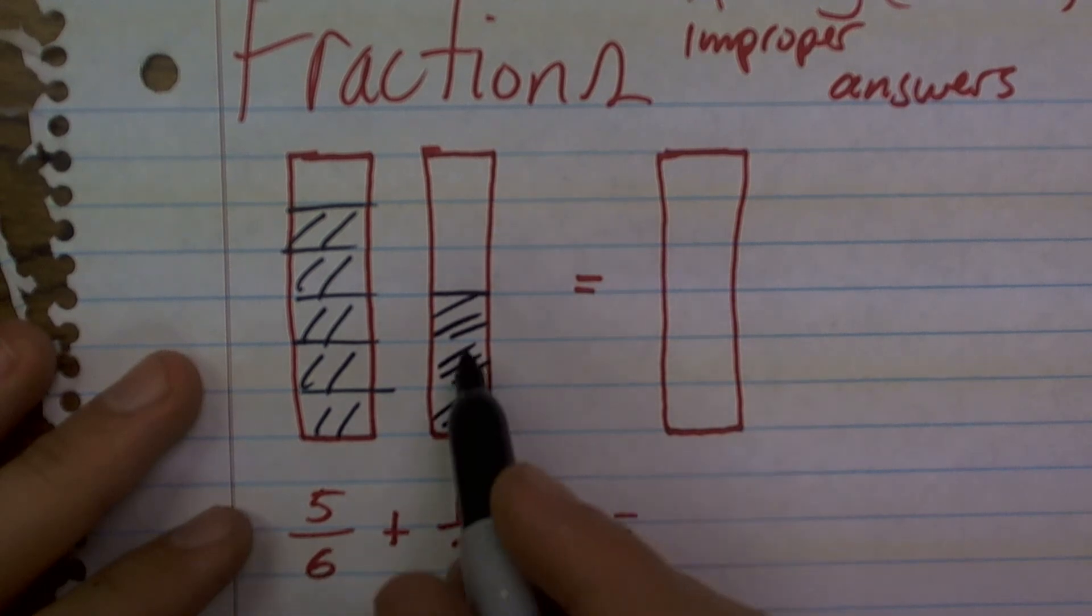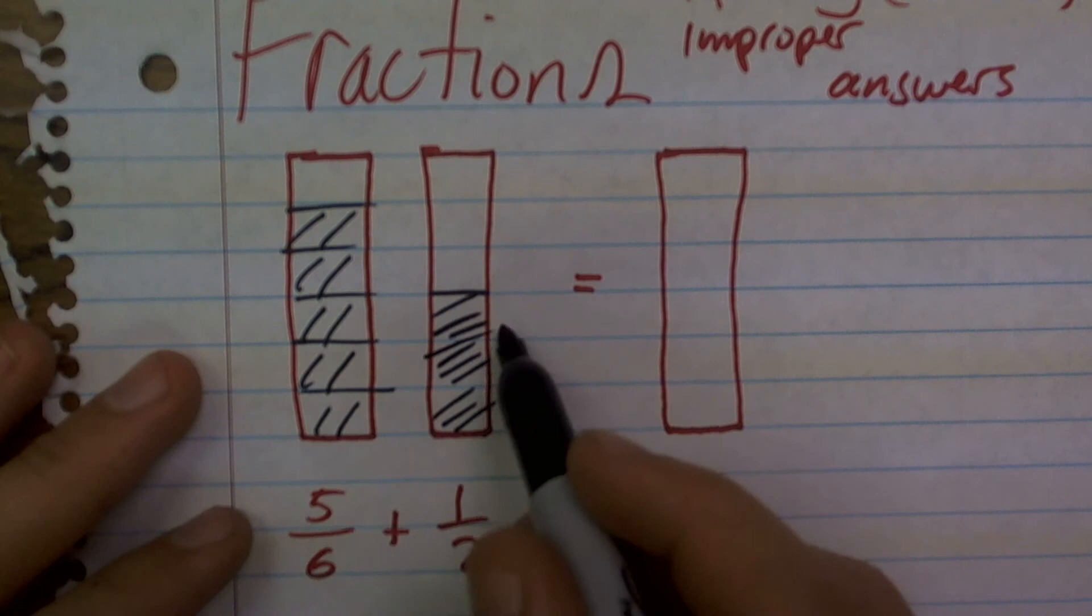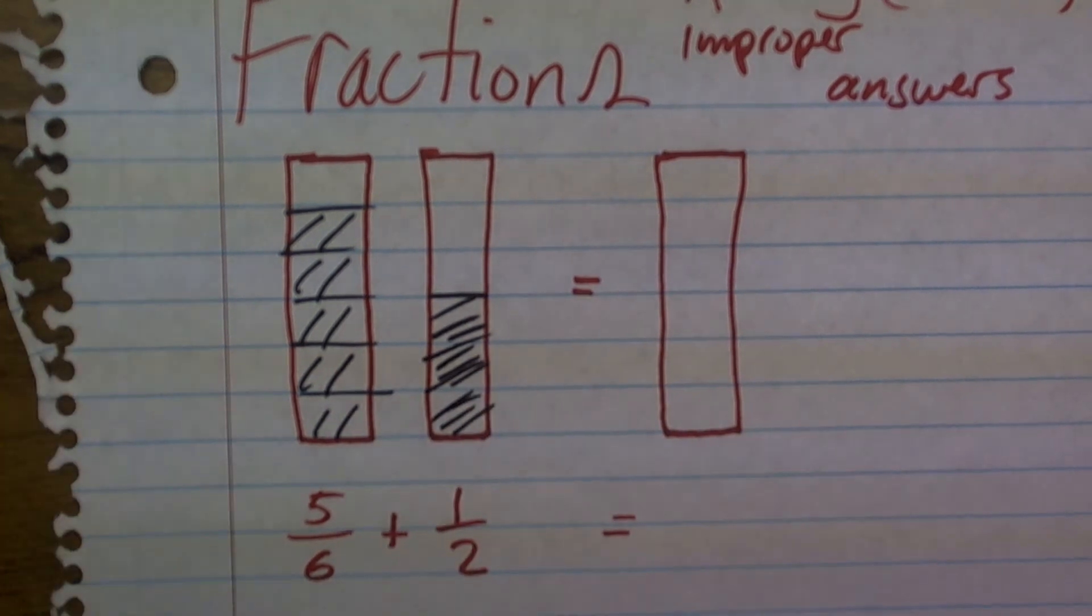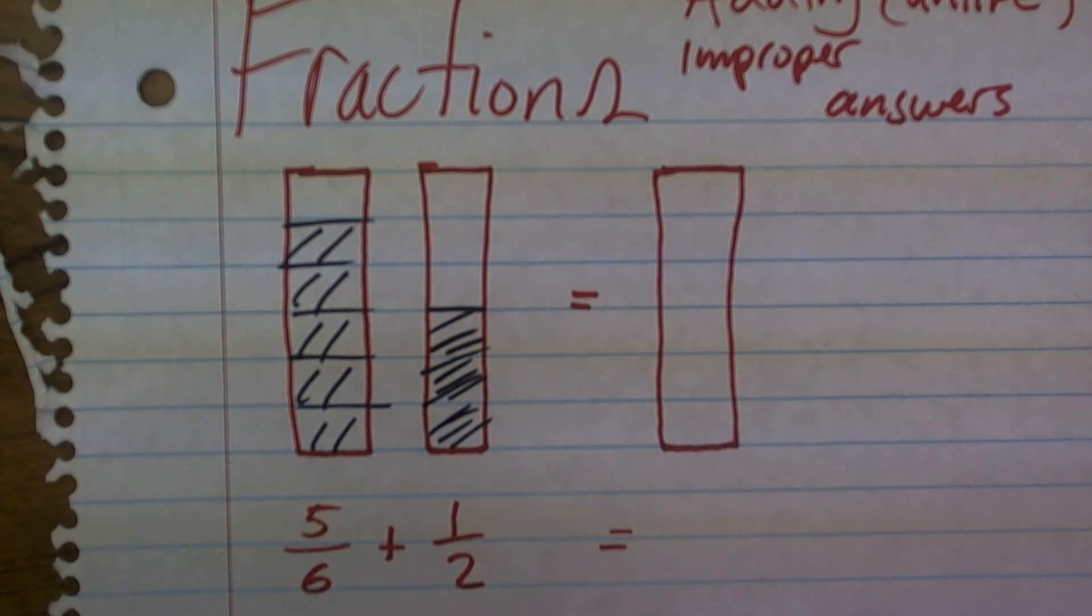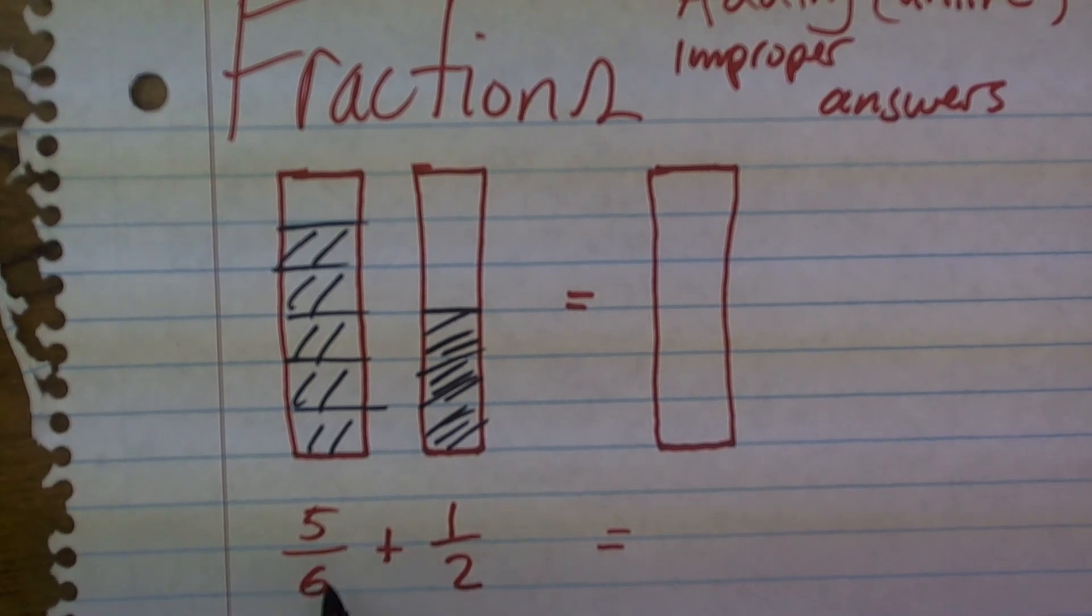And don't worry about how many, I'm just selecting that half. So when I want to add 5/6 and one half, remember whenever we're adding fractions, we have to make sure our denominator, the bottom of our fraction, is exactly the same.